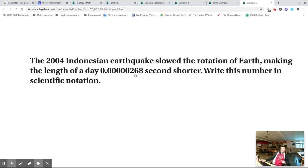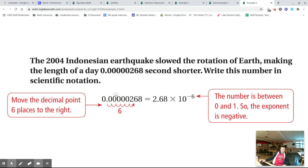How many decimal places did I need to slide it over? Looks like we had to slide it over six places. 1, 2, 3, 4, 5, 6. So we're at 2.68.